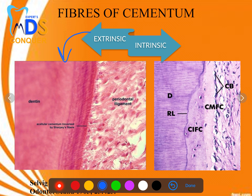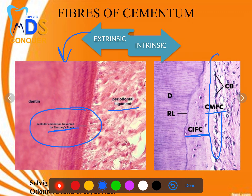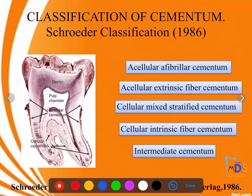Extrinsic fibers are from an external source — those are Sharpey's fibers, which attach the periodontal ligament to alveolar bone and are also present in cementum. Intrinsic fibers are produced internally by cementoblasts themselves. These cementoblasts line the cementum, and you can see cellular mixed fiber cementum and cellular intrinsic fiber cementum.